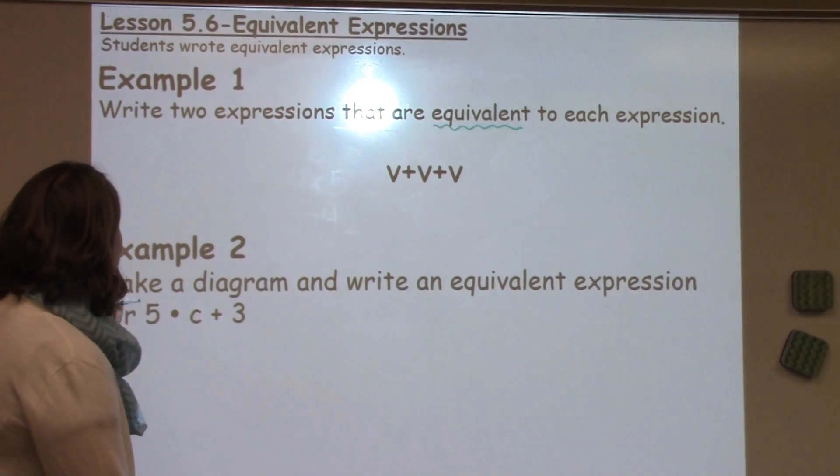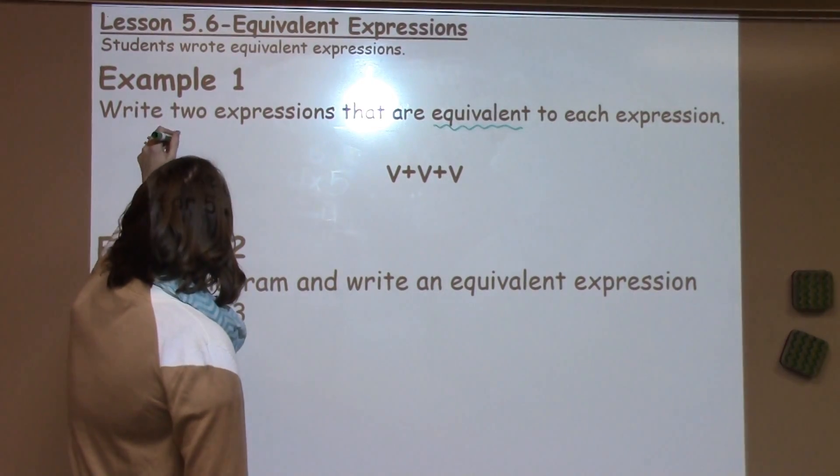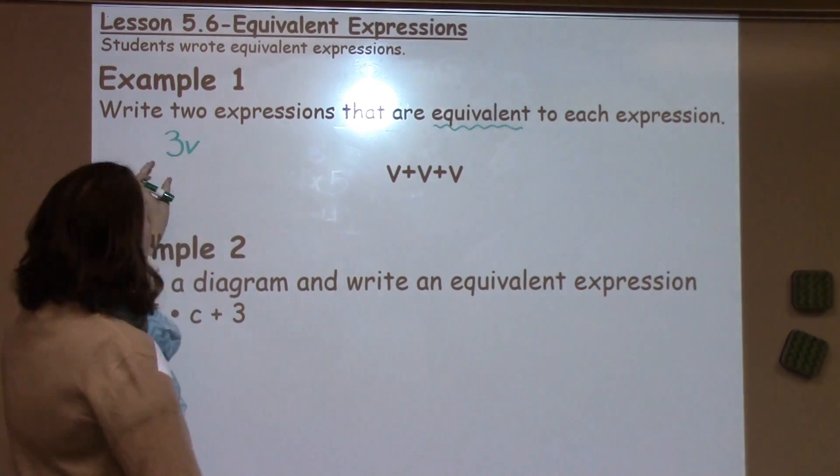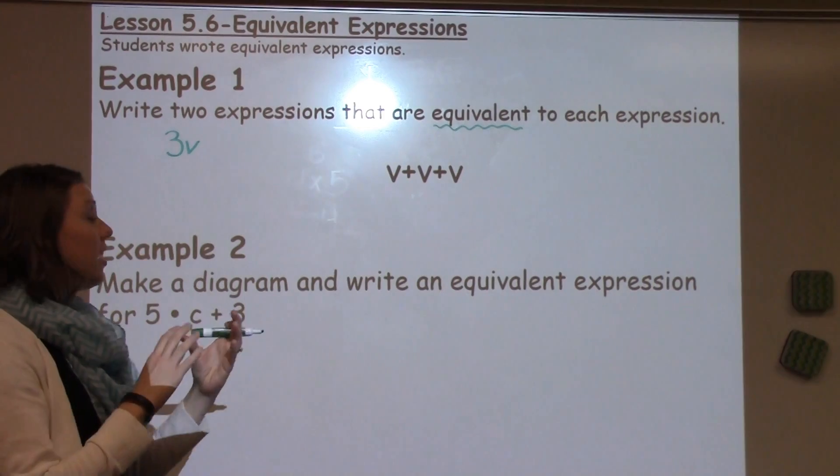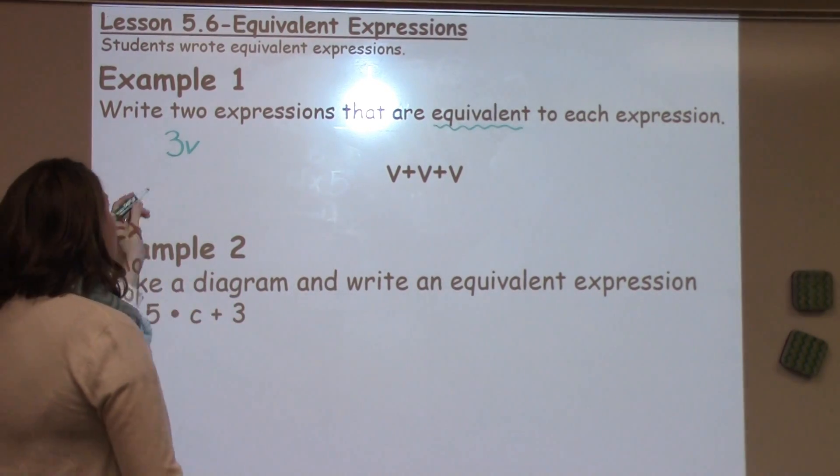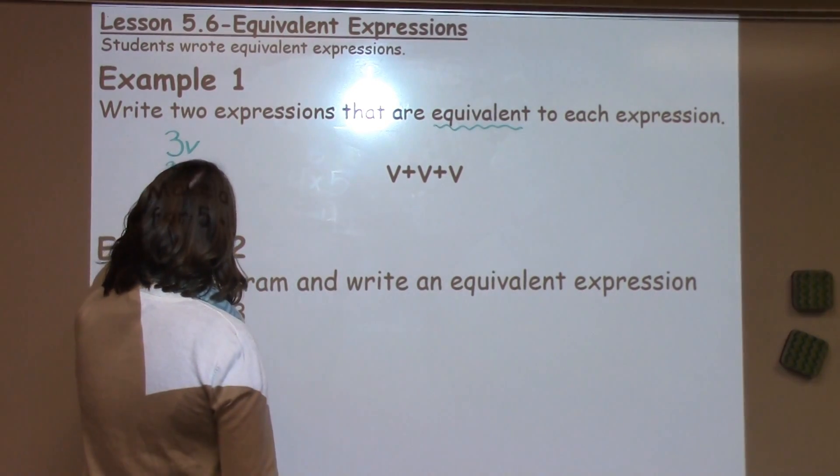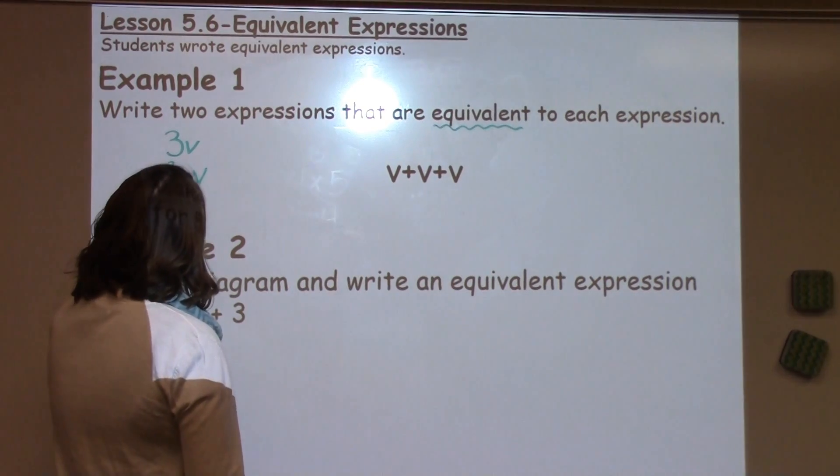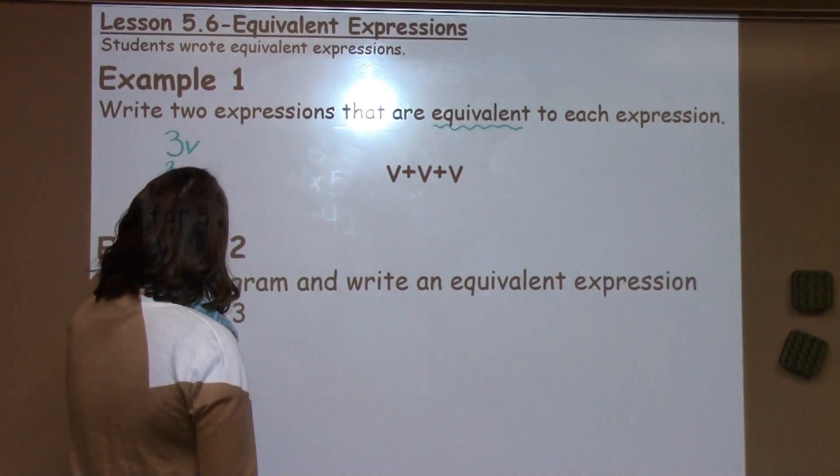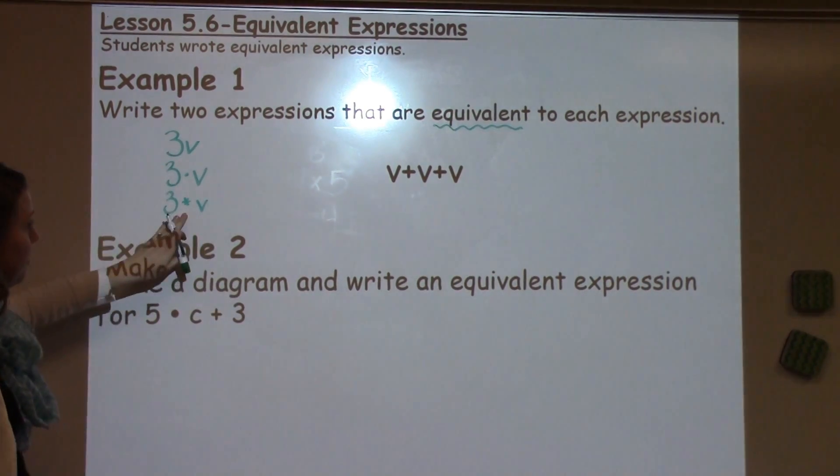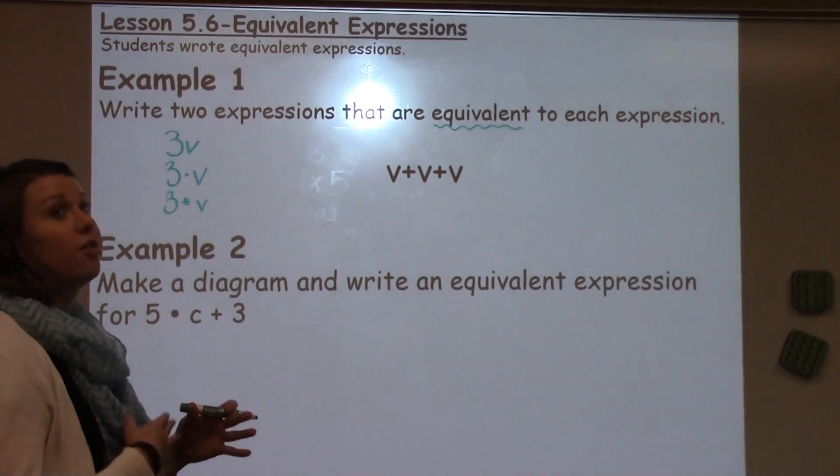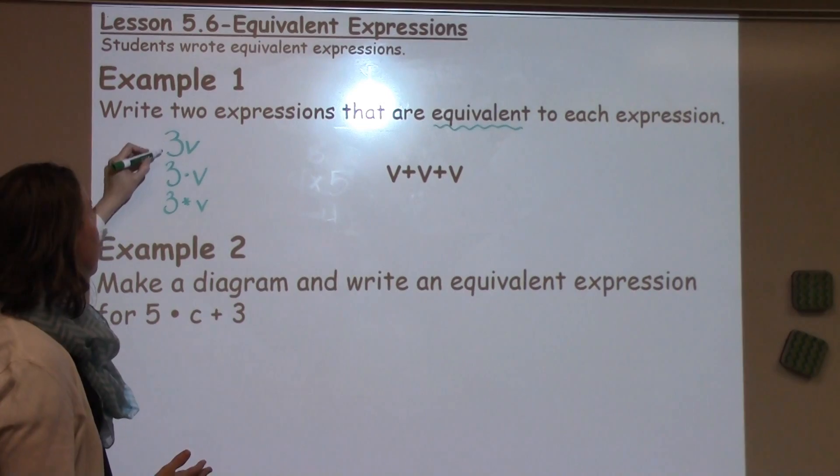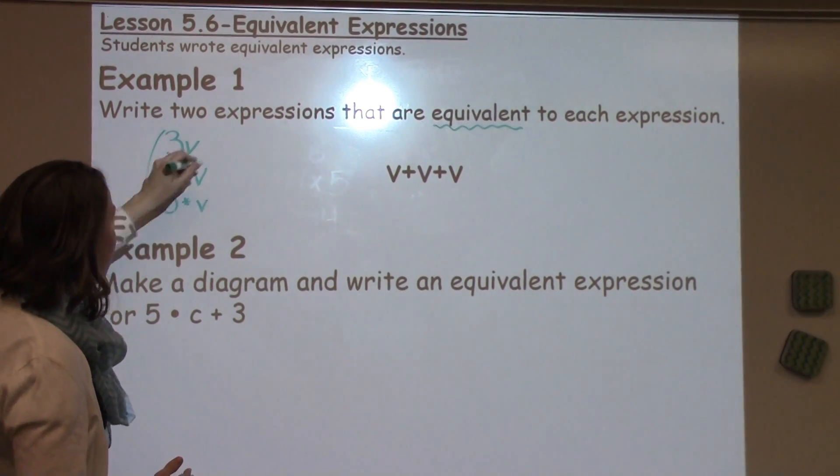Students can write this a couple of different ways. They could write 3V - remember when there's nothing in between those two and they're smashed together with a variable and a number, that means to multiply - or they could write it 3 times V. There's a couple of other ways to show multiplication. Sometimes students use a dot, sometimes they use a star. We really discourage students from using an X in this case because it looks like another variable. So it's important to use these different ways to show how to multiply.